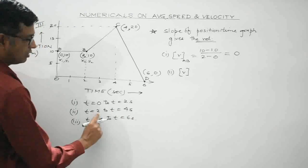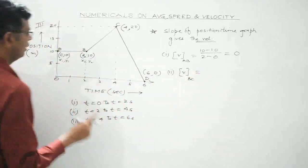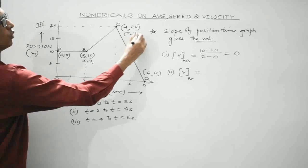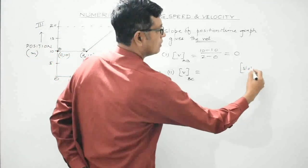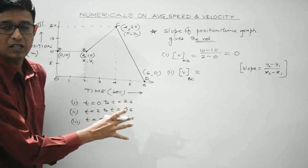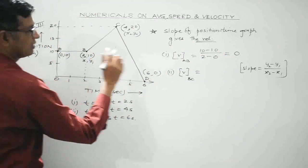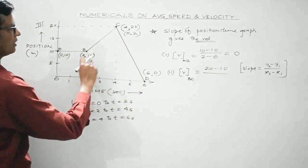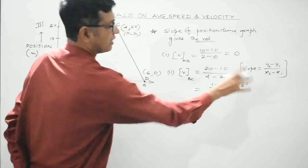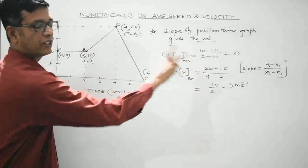For segment B to C (t = 2 to 4 seconds): slope = (y₂ − y₁)/(x₂ − x₁) = (20 − 10)/(4 − 2) = 10/2 = 5 m/s. So the velocity of the body during the interval t = 2 to 4 seconds is 5 meter per second.